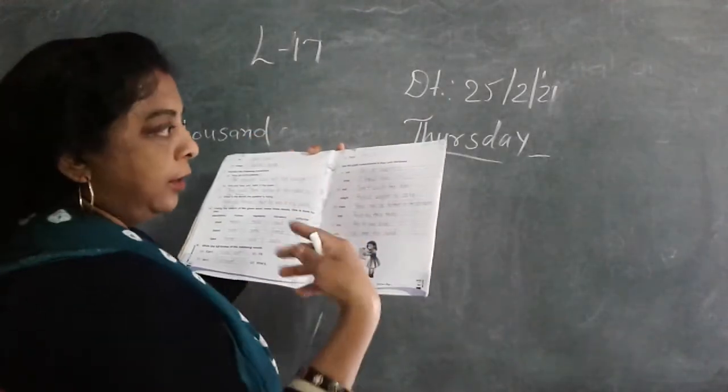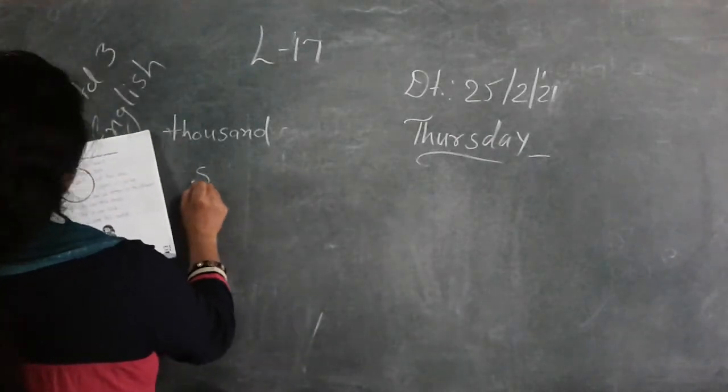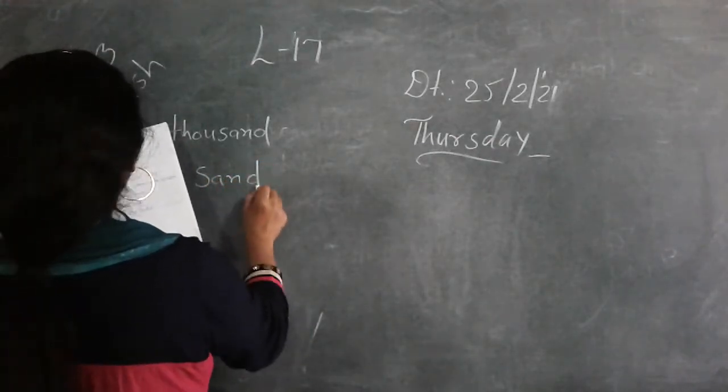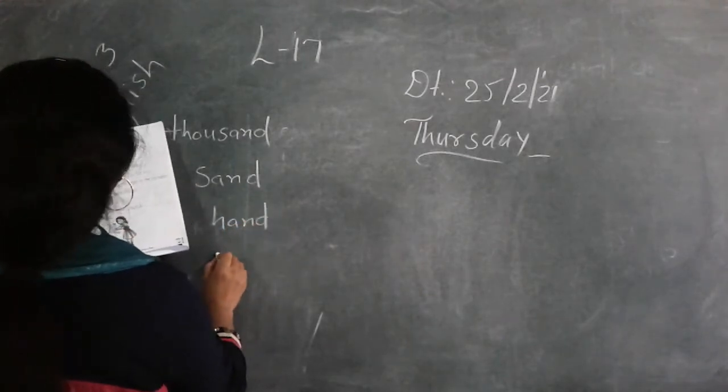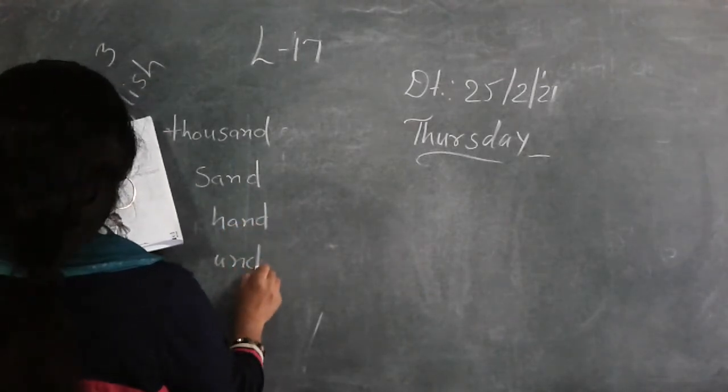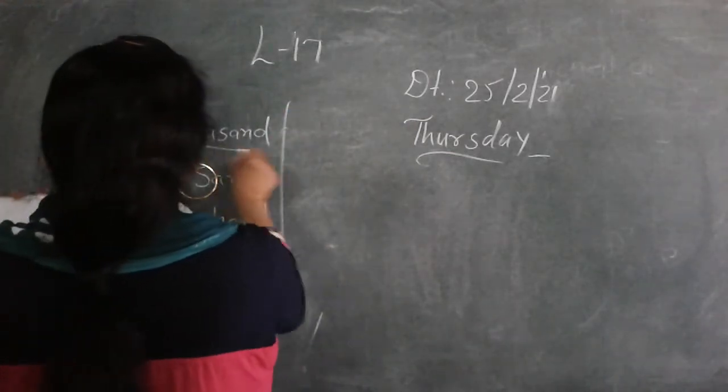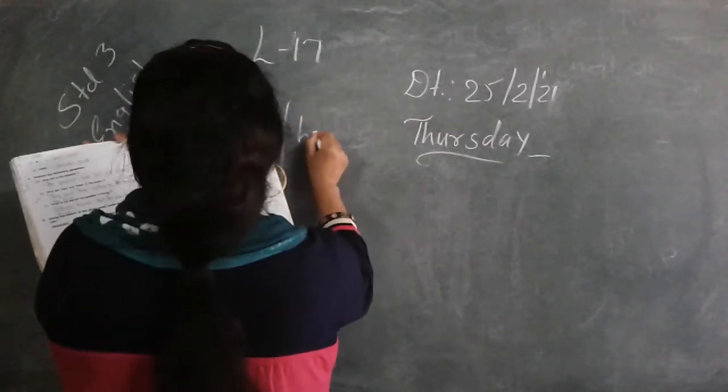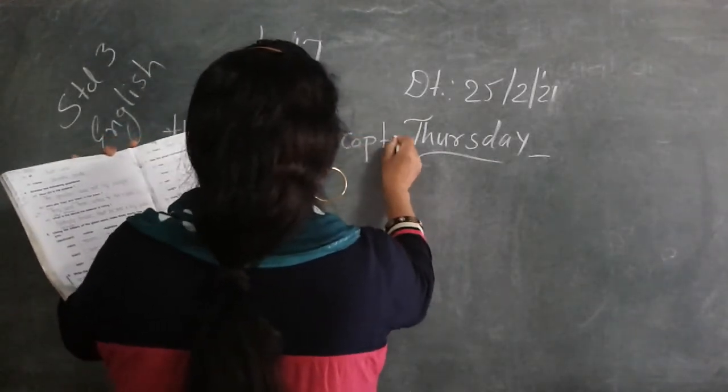Your word is thousand. And you have to make 3 words using these letters. So, S-A-N-D send, H-A-N-D hand and the last one is U-N-D-O undo.